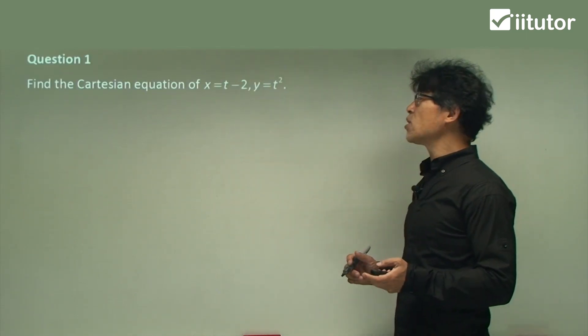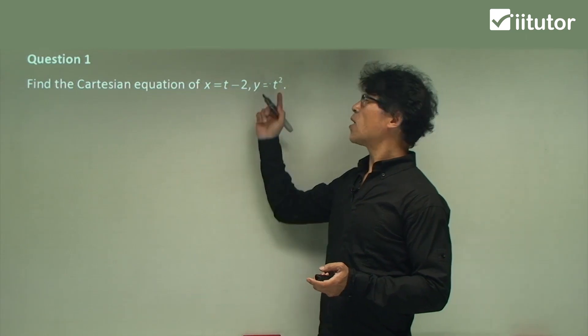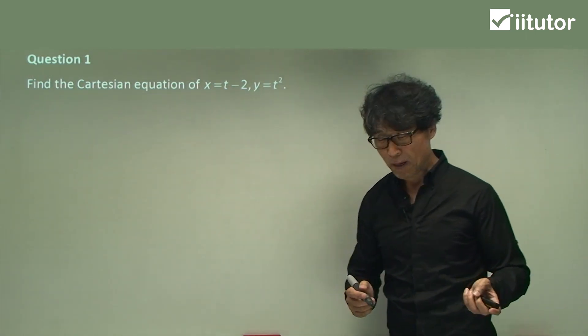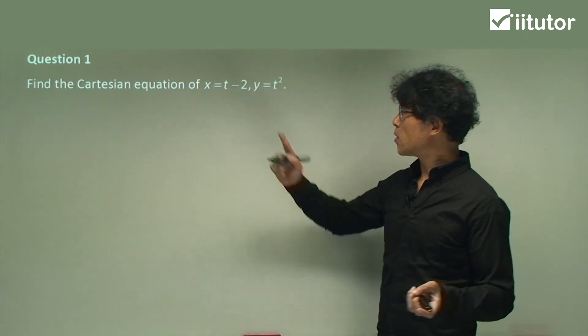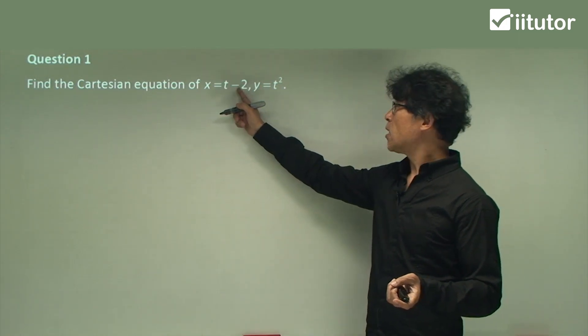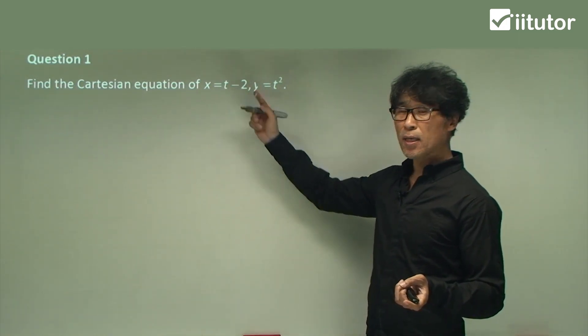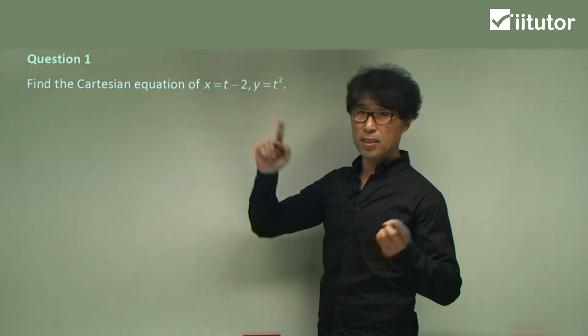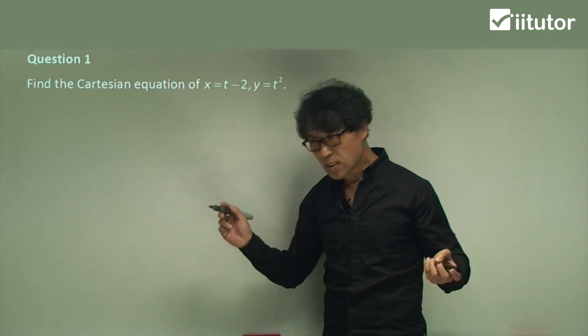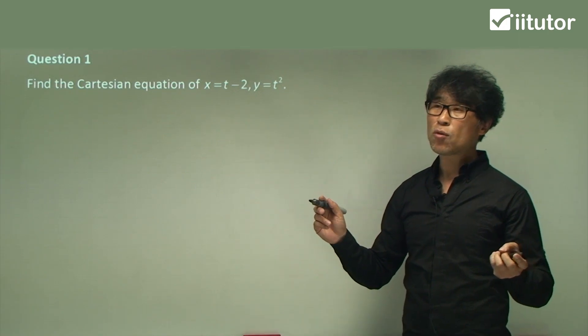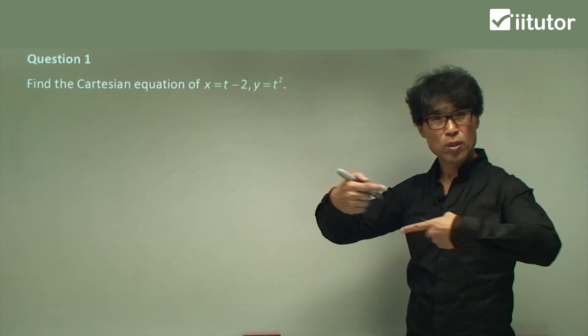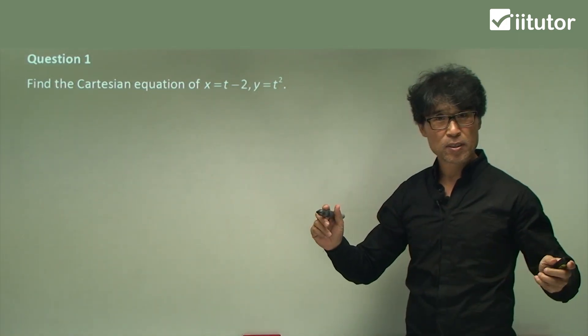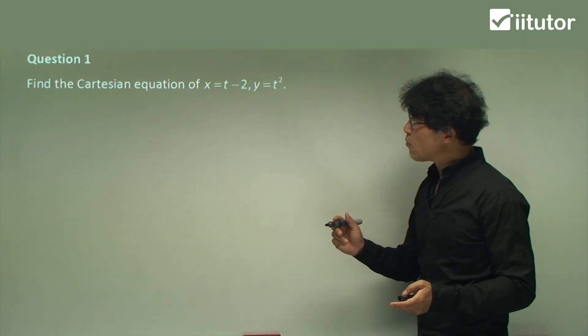Look at this one. Find the Cartesian equation of x equals t minus 2, y equals t squared. Now, something like this one, so x is talking to t, and then t is talking to y. So what you are going to do now, we are going to eliminate t. As long as t is dissipated, and as long as x and y are connected with equal sign, that's pretty much it. So we'll see how we go.